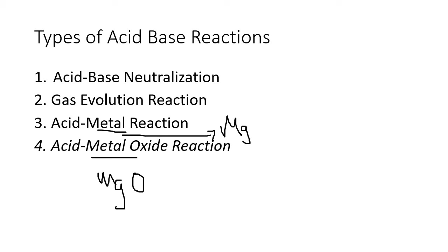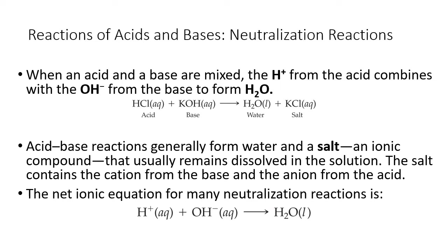When an acid and a base are mixed, the hydrogen ion from the acid combines with an OH from the base to form H₂O. This is the most common type — mainly with Arrhenius acids and bases. It generally produces water and a salt, and remember that 'salt' is actually a generic term for any ionic compound. These are even easier than normal because they're just adding specific names to reaction types we've already learned.